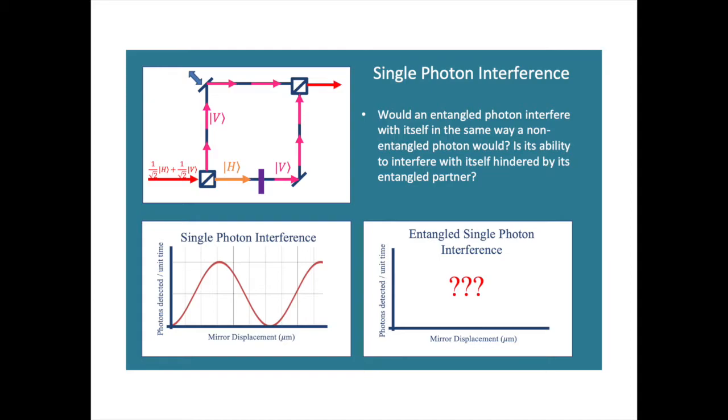With that background information in mind, let's jump into the theory of single photon interference. Our goal is to determine if entangled photons interfere with themselves in the same way that non-entangled photons do. To answer this question, we'll be using a Mach-Zehnder interferometer.